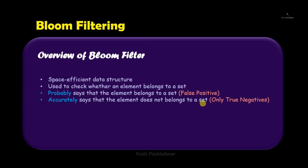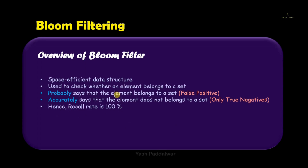On the other hand, if the answer is negative — meaning the bloom filter says the element is not present in the set — then it gives you 100% surety that the element does not belong to the set. Hence, a bloom filter will give you only true negatives: if the element is not present in the set, you can trust it completely. Because of this, the recall rate will be 100%, since every negative prediction is going to be 100% correct.